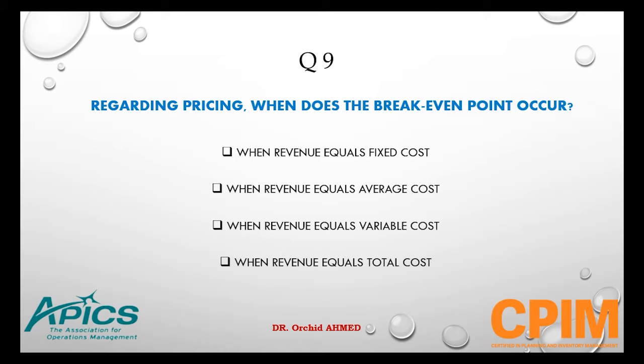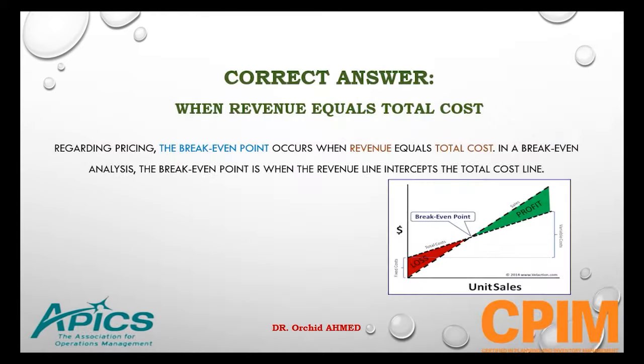Question number 9. Regarding pricing, when does the break-even point occur? Options: when revenue equals fixed cost, average cost, variable cost, or total cost. The right answer is when revenue equals total cost. In a break-even point analysis, the break-even point is when the revenue line intercepts the total cost line — on the graph, profit equals loss at this point.